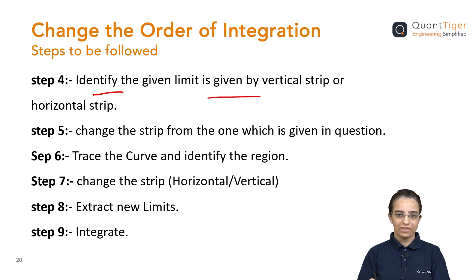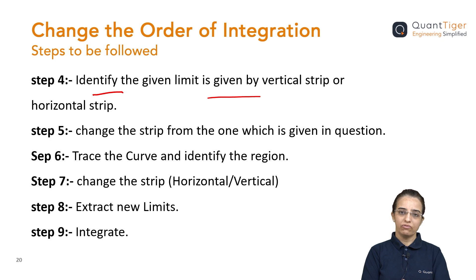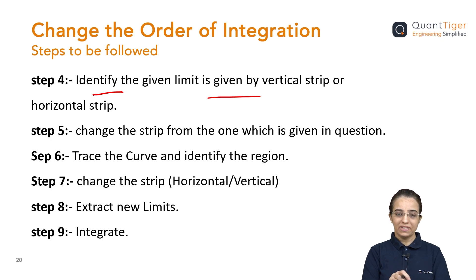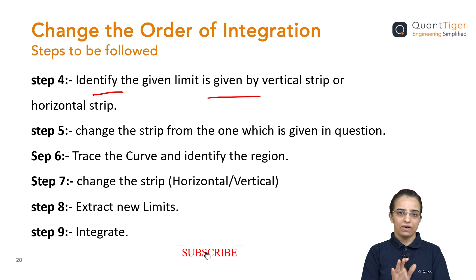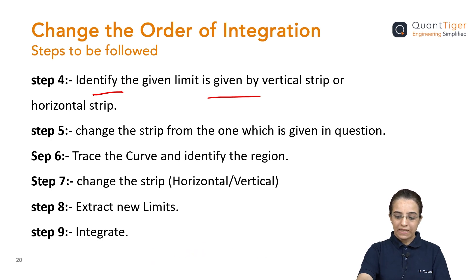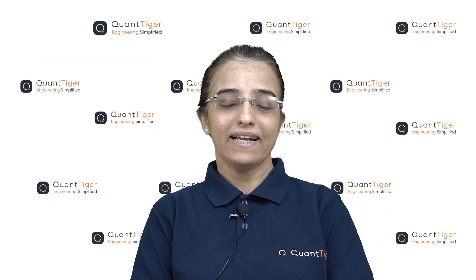Once you identify this, you have to trace the curve — you have to draw the sketch of the given curve. After drawing and changing the strips, you should be able to find the limits of each variable. Once you find the limits, the last step is to just integrate and put the values of the limits. The steps are quite clear. Few of the steps we have done while solving double integration of type 1, type 2, type 3. But the important additional step here is identifying whether the given limits are a vertical strip or a horizontal strip, and then changing them. After changing, the limits will also change — that is a very important step.